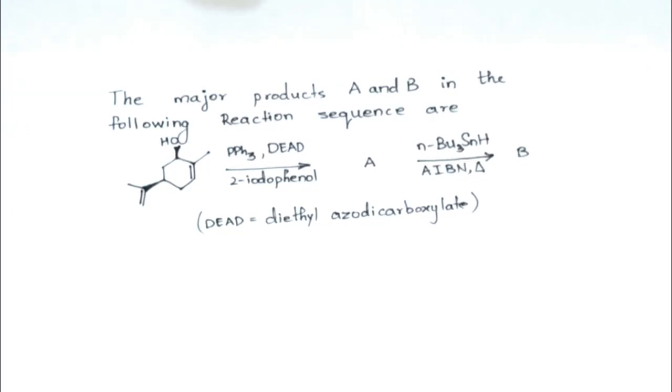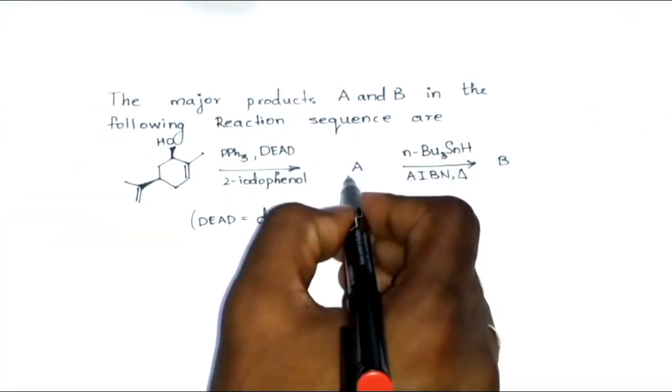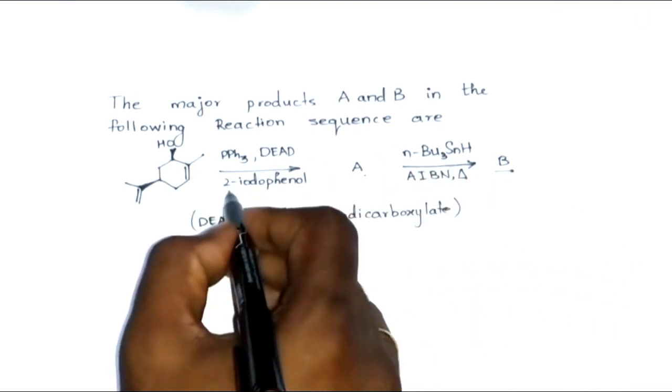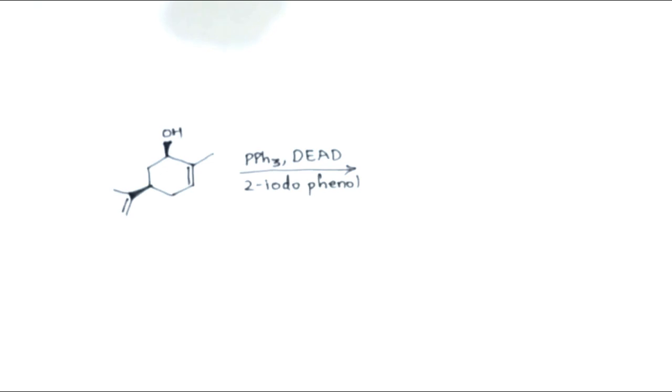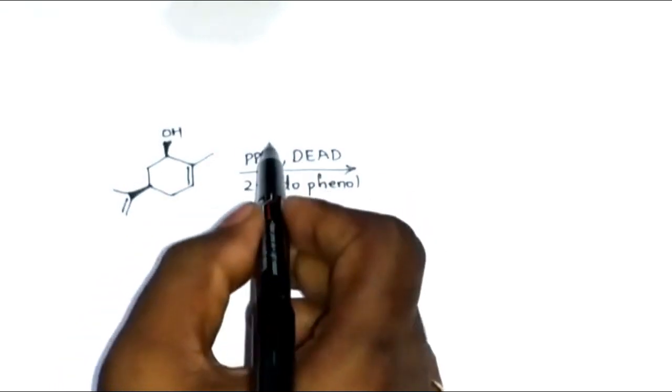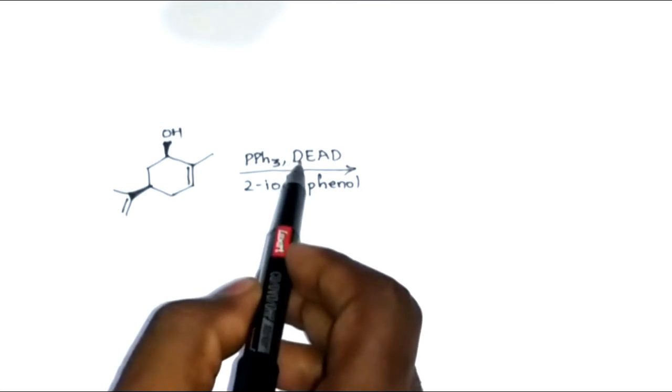Hello friends, in this video we will solve a question from CSIR NET June 2012. The major products A and B in the following reaction sequence are: Let's start with these reagents. This is triphenyl phosphine, this is diethyl azodicarboxylate, and 2-iodophenol.